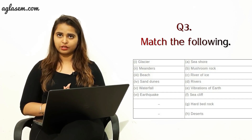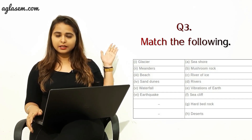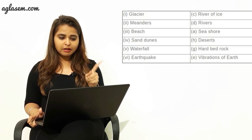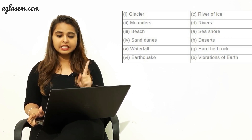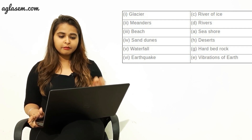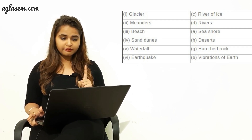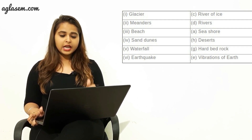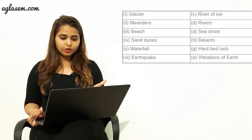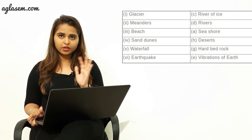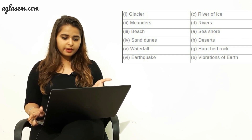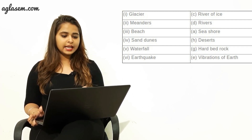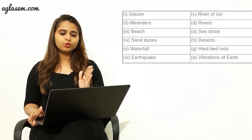The third question: match the following. You can see the box on screen. The correct answers are: glacier matches with 'river of ice'; meanders matches with 'rivers'; beach matches with 'seashore'; sand dunes matches with 'deserts'; waterfall matches with 'hard bed rocks'; and earthquake matches with 'vibration of earth'.